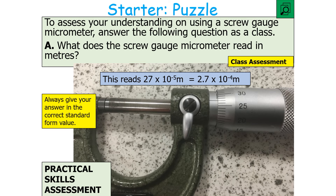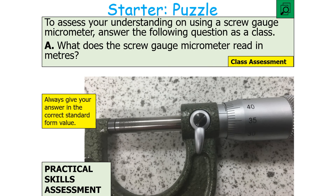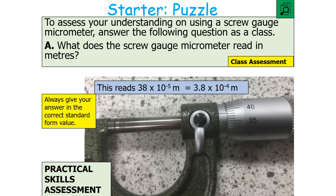In all these wire diameter examples, the main scale shows no 0.5 mm divisions encountered, so no extra value needs to be added. For instance, where the main scale and thimble scale intersect at 3, the reading is 3 times 10 to the minus 5 metres. Where the intersection is at 38, the reading is 38 times 10 to the minus 5 metres, or 3.8 times 10 to the minus 4 metres — again, no 0.5 mm values to add.